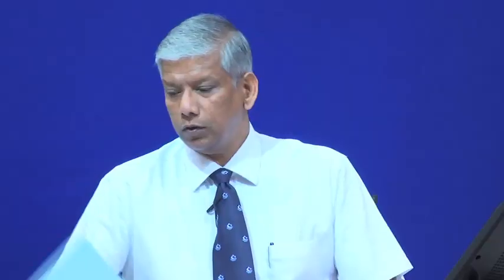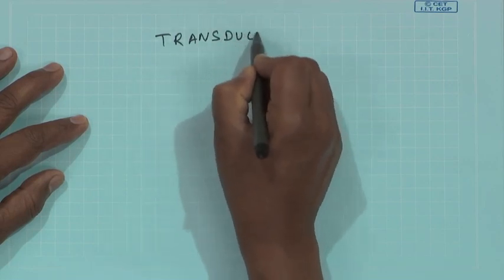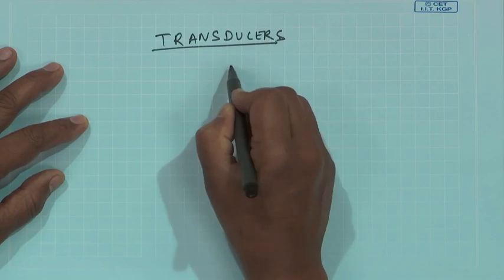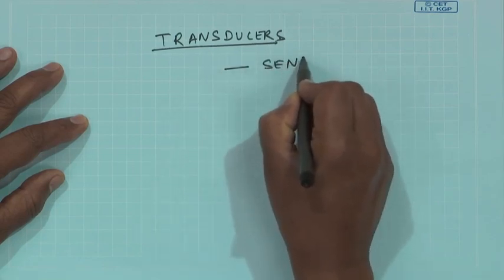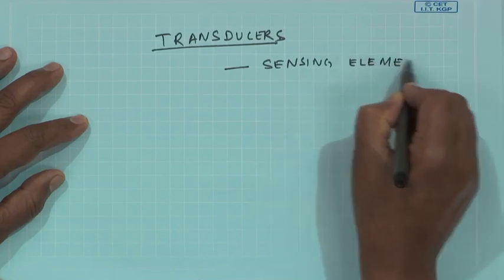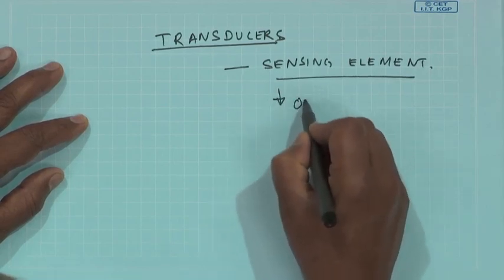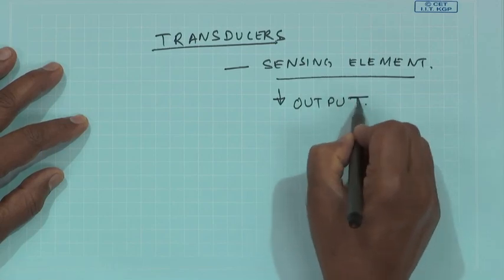In this week we are going to see what are these different types of transducers, what is the sensing element, and what kind of output does this sensing element give. When we do condition based monitoring or condition based maintenance, there are certain areas in which these measurements are done.